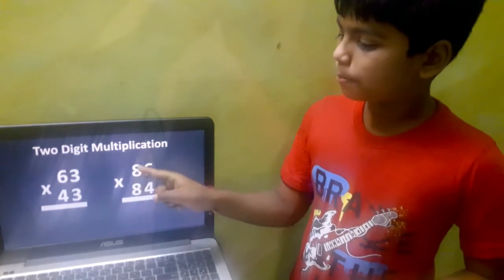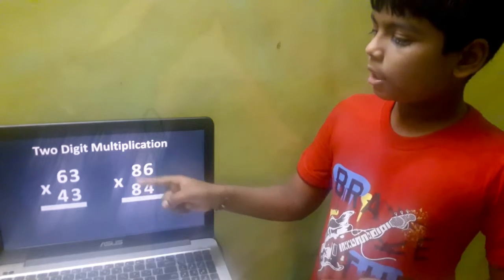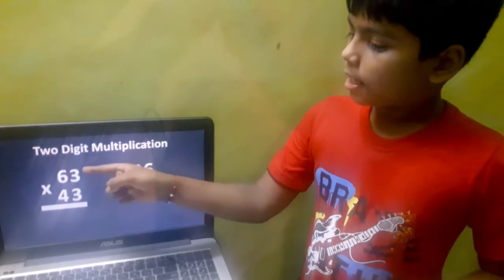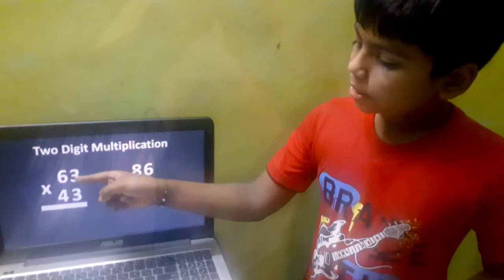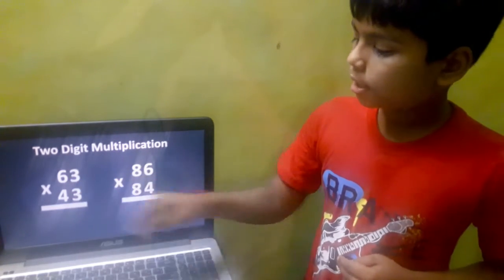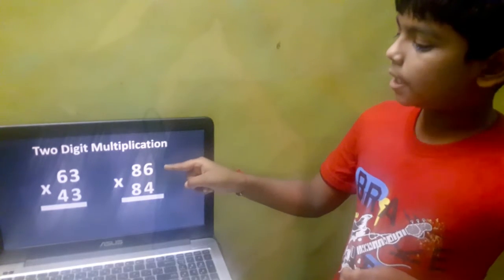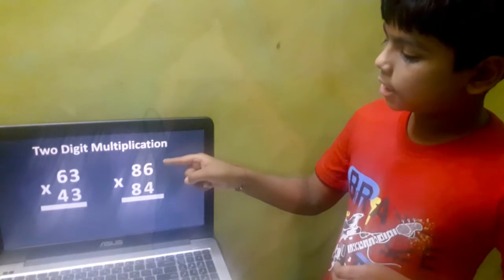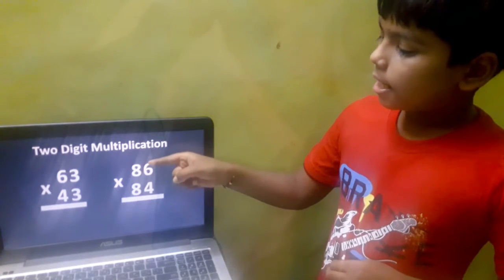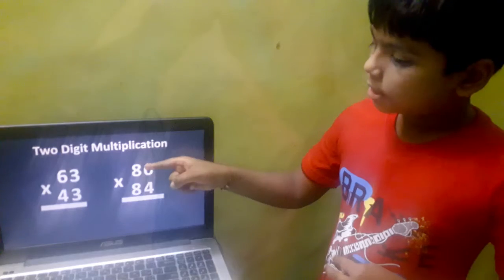Here are two examples. In the first example, the unit digits are the same and the tens digits total will be 10. In the second example, the unit digits total will be 10 and the tens digits are the same. For instance, 6 plus 4 equals 10.